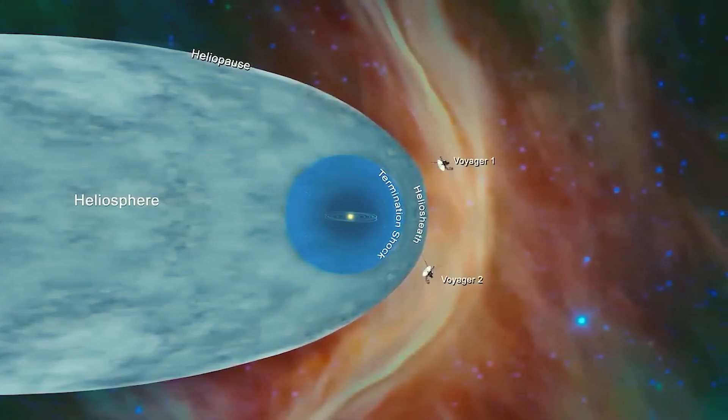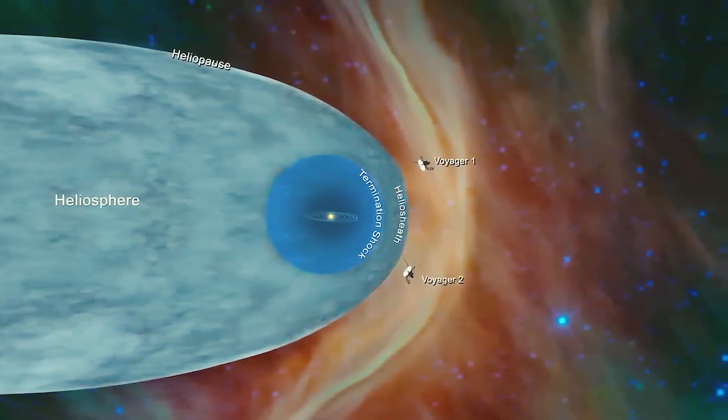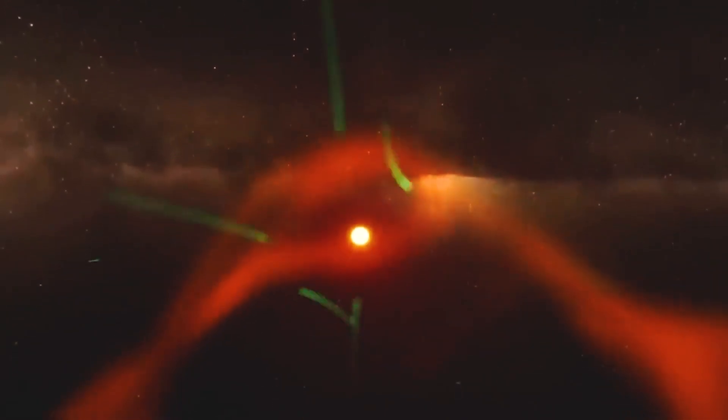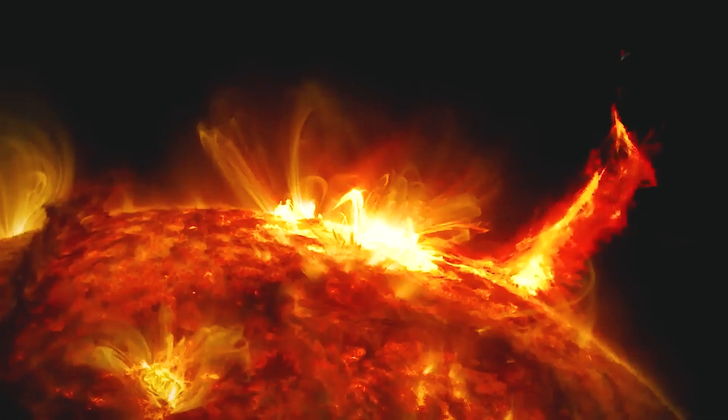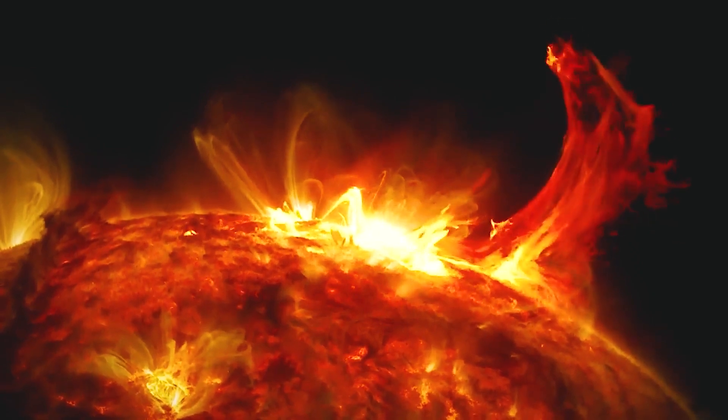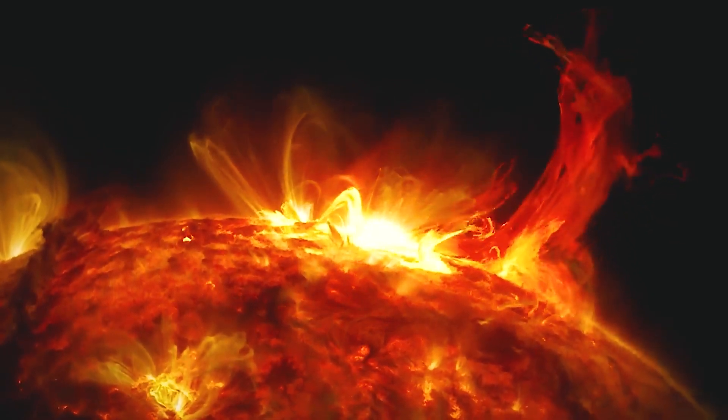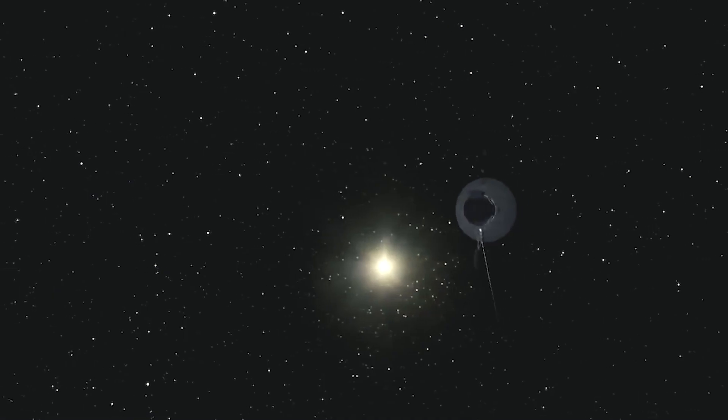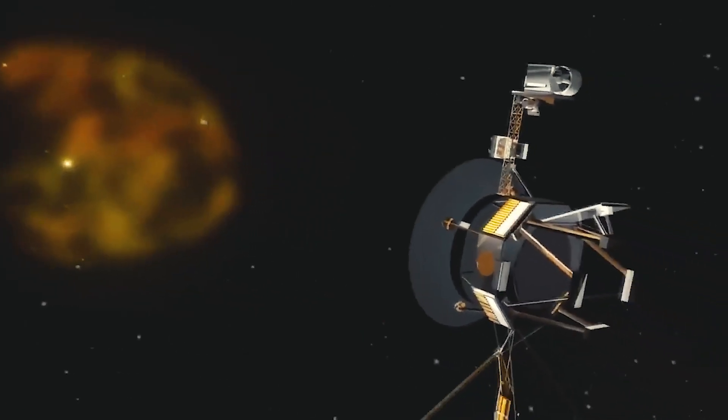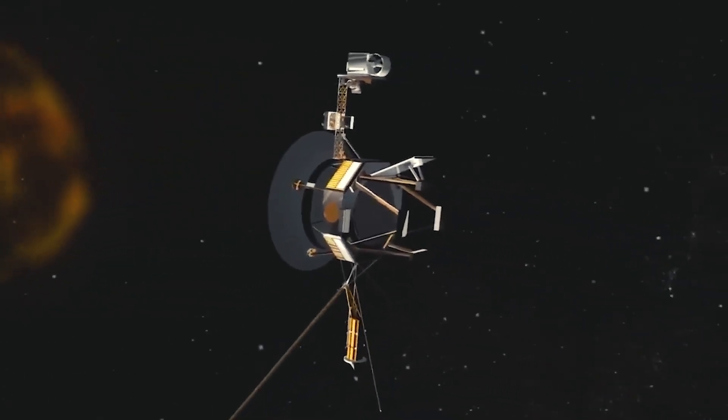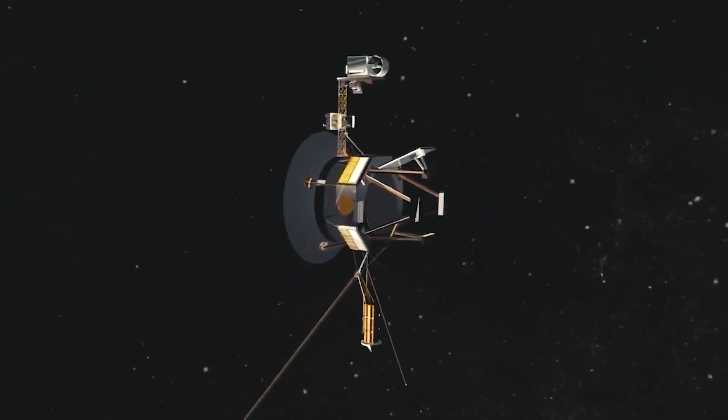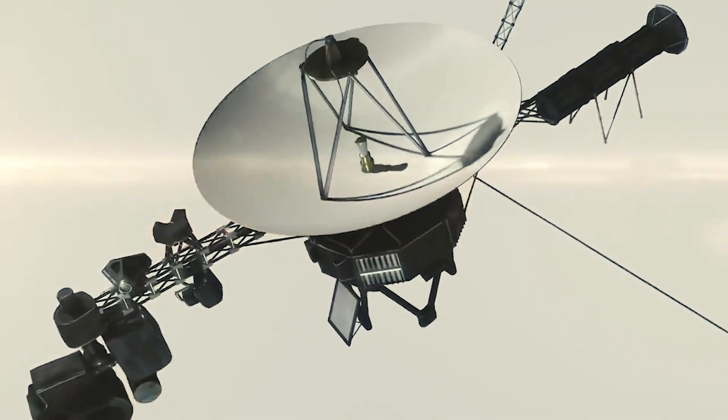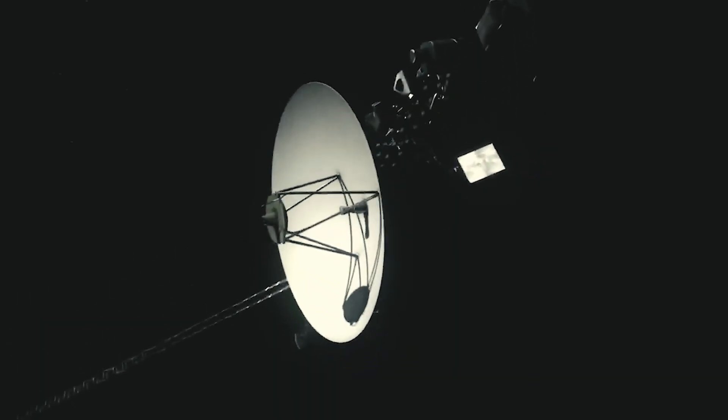The two explorers investigated how the interstellar medium interacts with solar wind, the Sun's continual flow of charged particles. They have also supplied information about the heliosphere, which is a protective bubble that surrounds our solar system. The solar wind creates the heliosphere, which is molded and changed by interstellar circumstances. The actual border of the solar system, the place where solar wind ends and interstellar space begins, is called the heliopause.